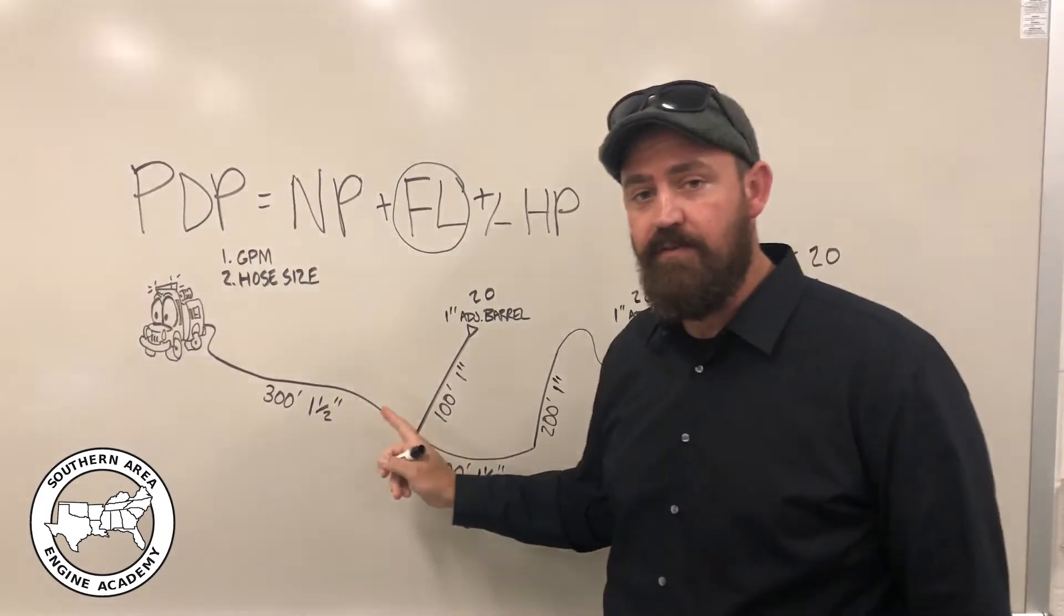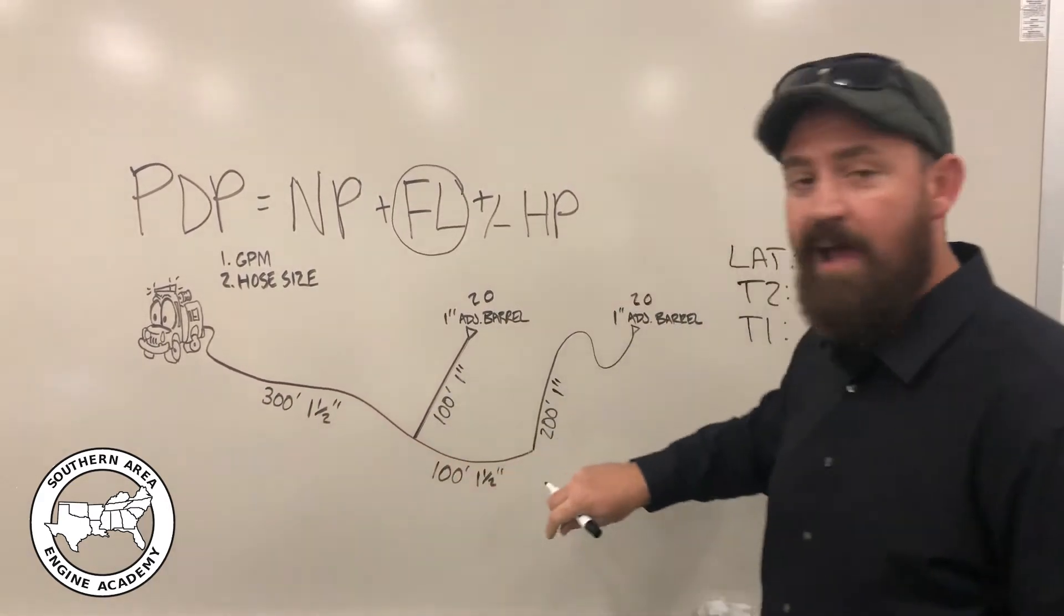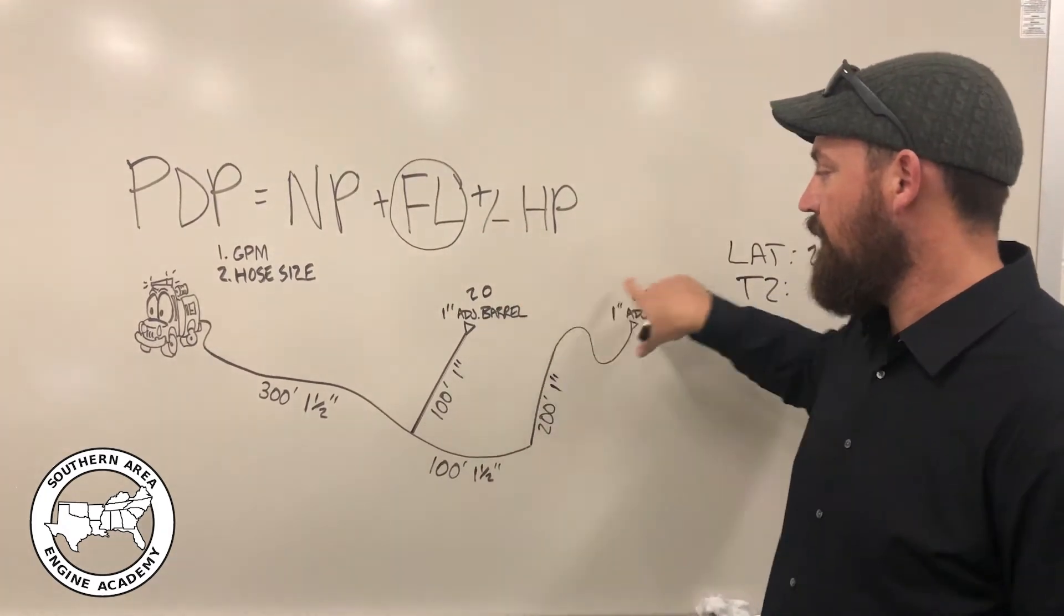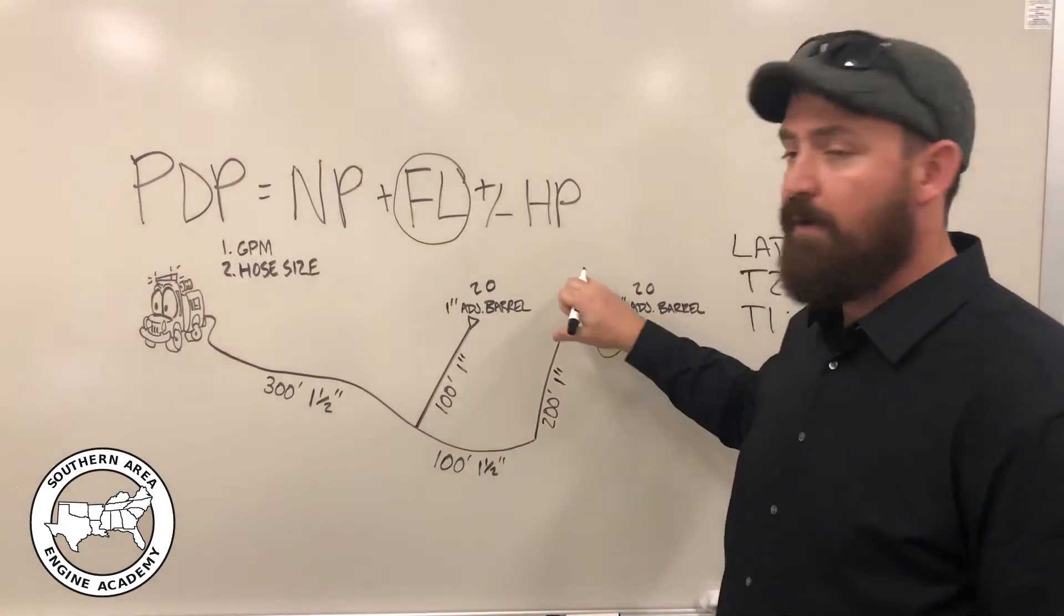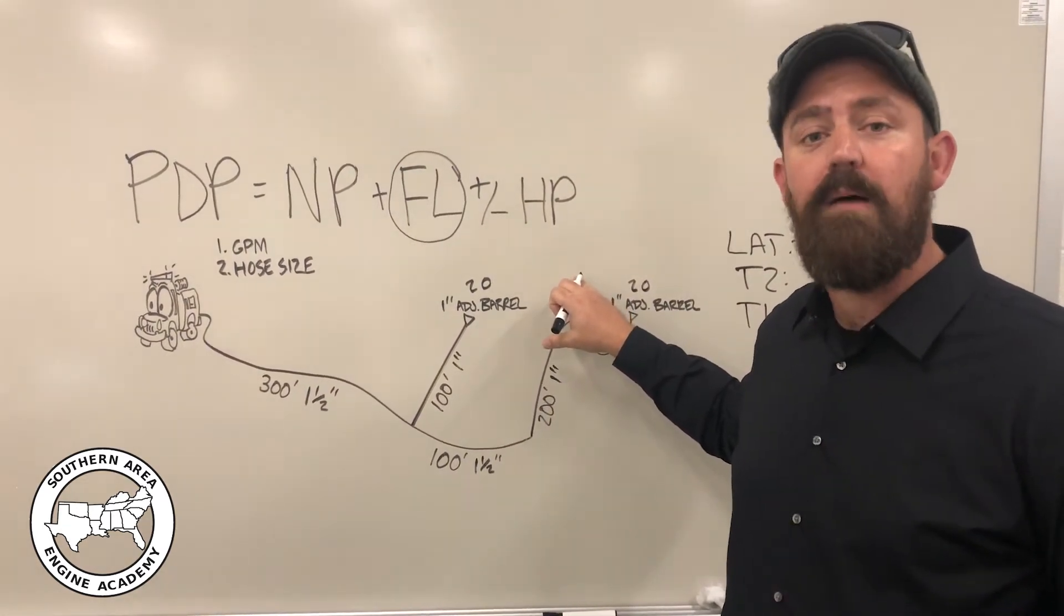Now, as we go back to trunk one, we have 300 feet of inch and a half. But this section of hose has to supply both nozzles. So we add those together, we get 40 GPM. Now we don't really have a value for 40 in the IRPG, so we're going to bump it up to the worst case scenario, which would be 60 gallons per minute.